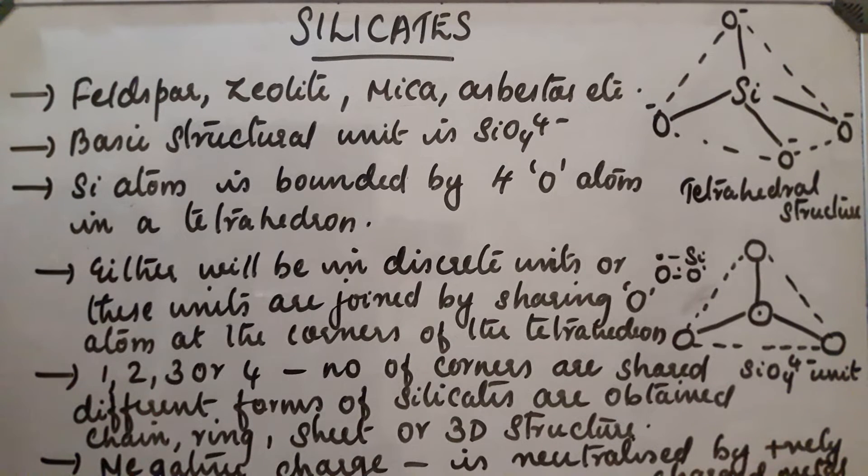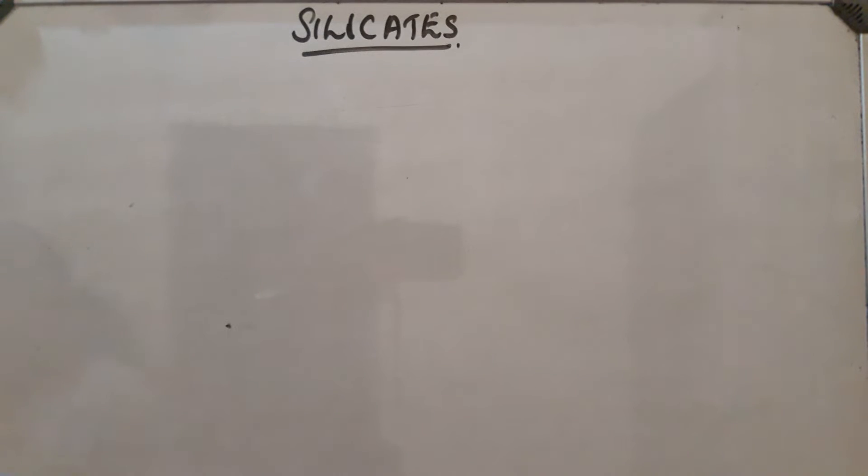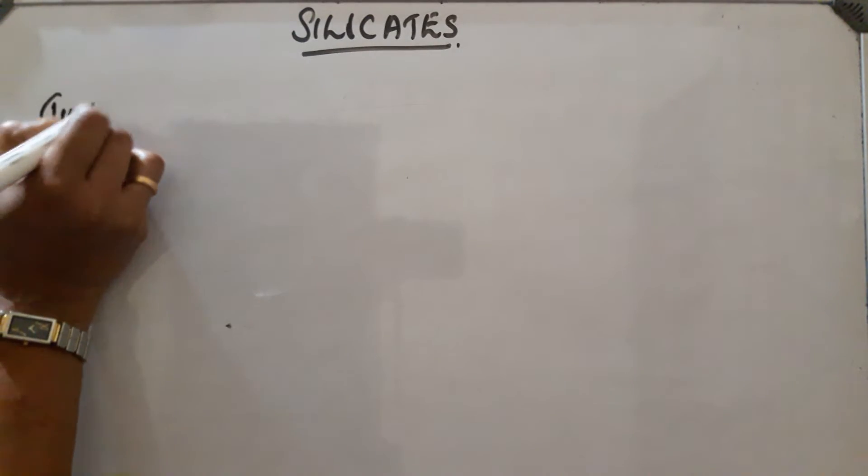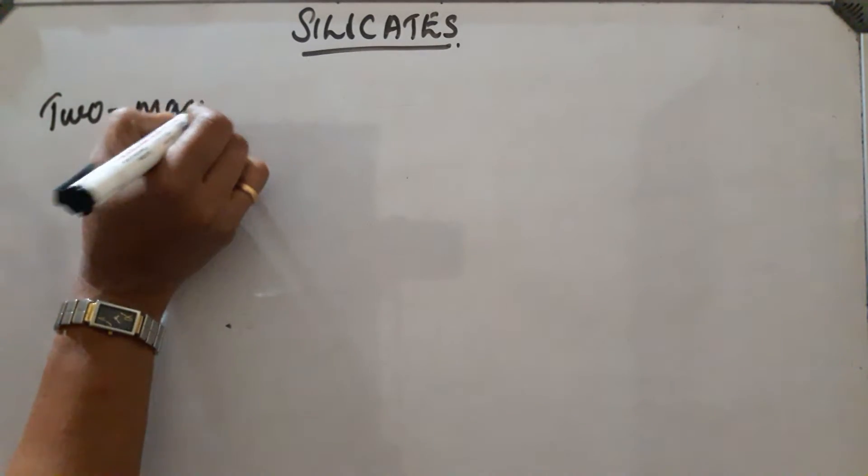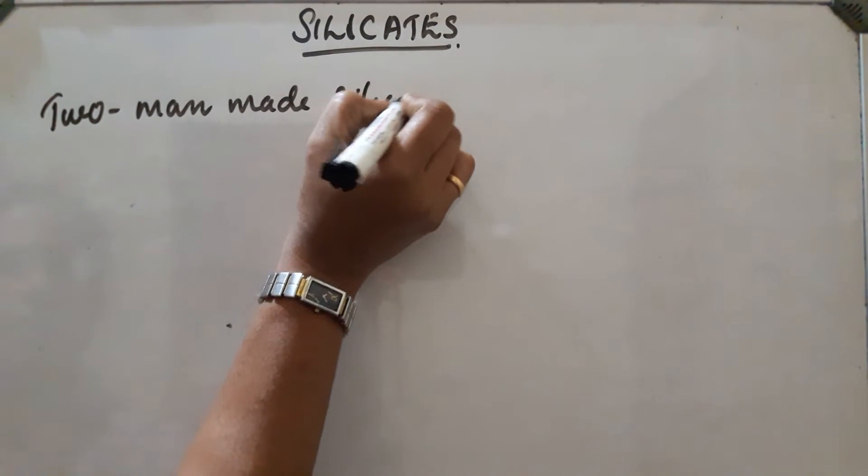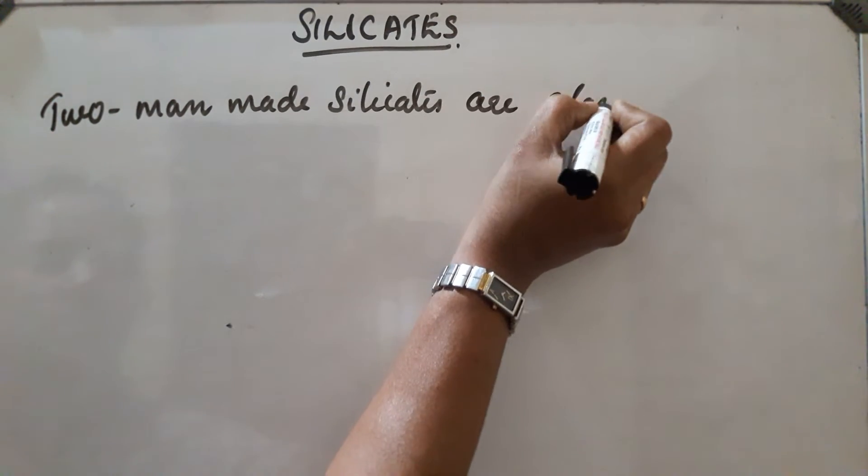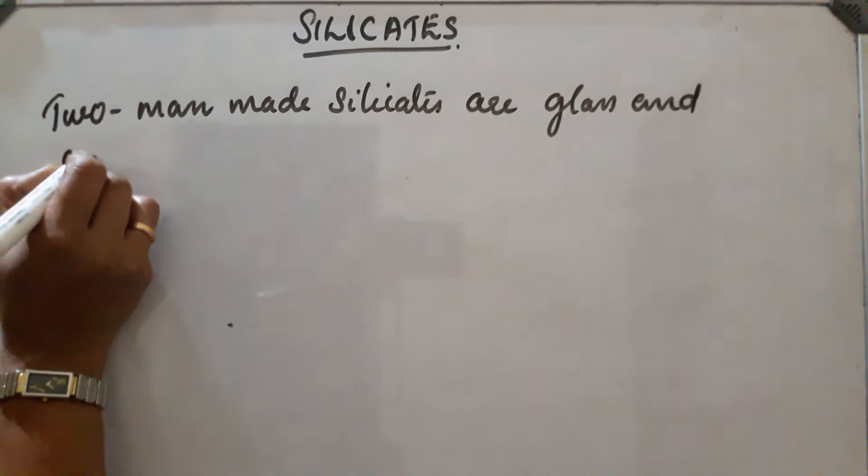This will be the structure of silicates. Two important man-made silicates are glass and cement.